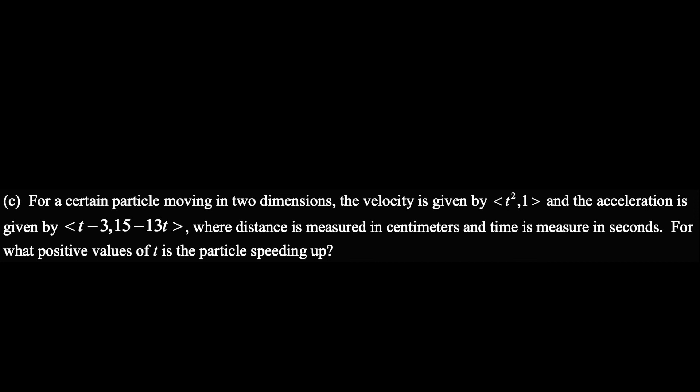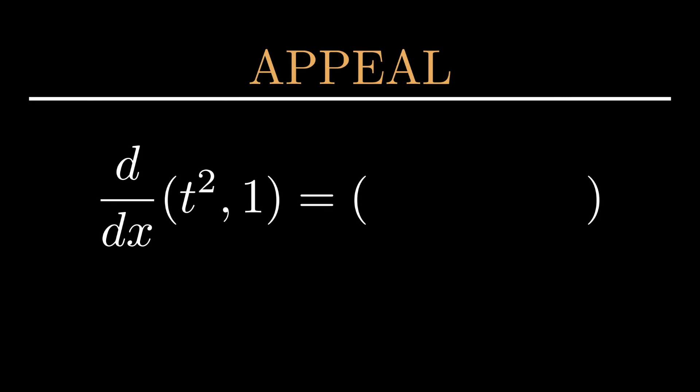For the given velocity of (t squared, 1), the given acceleration is incorrect. The derivative of velocity would be (2t, 0), so that would be the actual acceleration. Since t is always positive and t squared and 2t are always positive, the particle would be speeding up constantly.